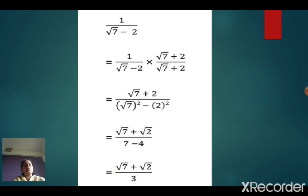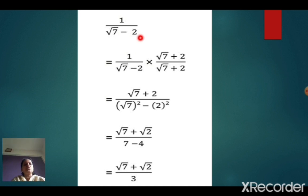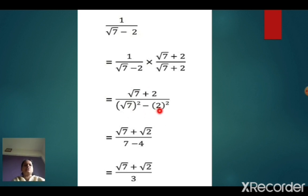See the next one: 1 upon root 7 minus 2. Here in the denominator, root 7 is irrational and 2 is rational, but we consider the whole term as an irrational number. So we take the conjugate of root 7 minus 2, which becomes root 7 plus 2. Multiply numerator and denominator by root 7 plus 2. Again, 1 into root 7 plus 2 gives root 7 plus 2, and applying a minus b into a plus b gives root 7 squared minus 2 squared. The last three sums all use the same method and formula.